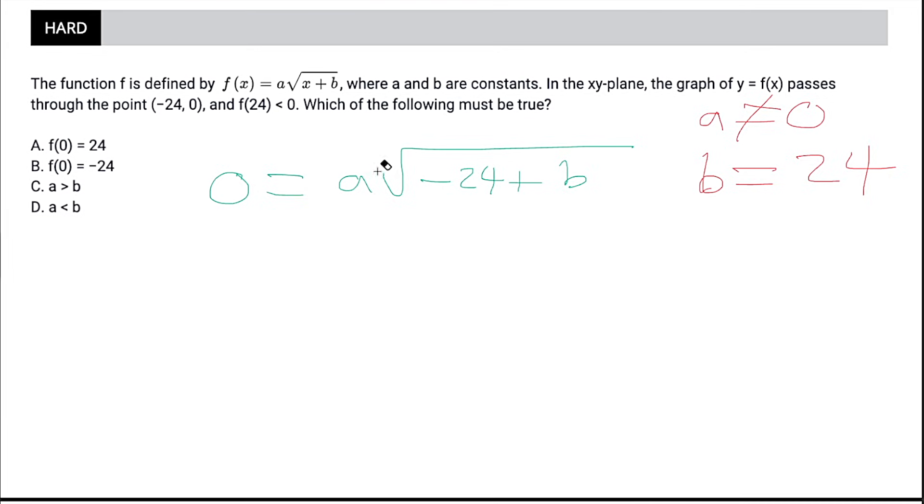Now let's plug stuff in again. This time we'll plug in our f of 24 is less than 0. So 0 is going to be greater than a times the square root of, we know that instead of x, we'll have 24. Instead of b, we'll have 24 because we actually know that b is 24. And 24 plus 24 is going to be some sort of a whole number. So now we know that a has to be negative in order for this to be less than 0. So a is less than 0. And it's asking us which of the following must be true. Well, looking at choice c and d, it becomes pretty apparent that if a is less than 0 and b is 24, a has to be less than b no matter what. So our answer is choice d.